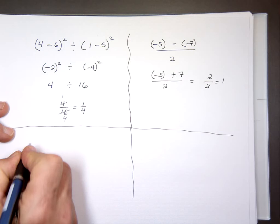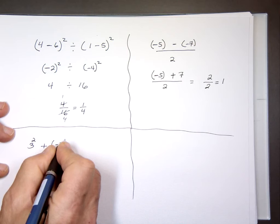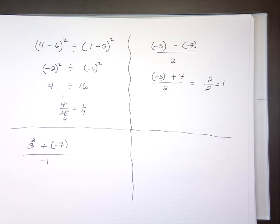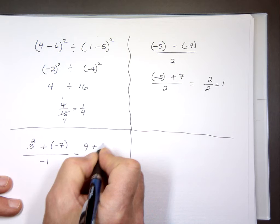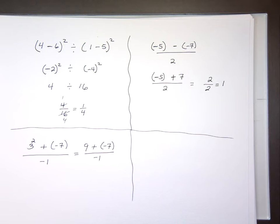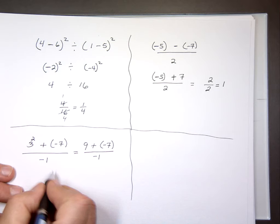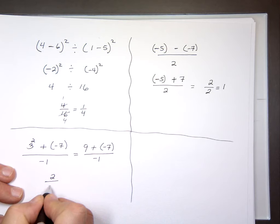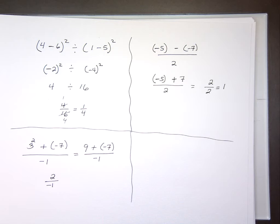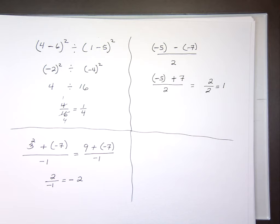3 squared plus negative 7, divided by negative 1. 3 squared is always 9. So we have 9 plus negative 7, divided by negative 1. For the numerator: adding two numbers with different signs — subtract 7 from 9, that's 2, and the sign of the larger is positive. So we have positive 2 divided by negative 1 — different signs — the answer is negative 2.